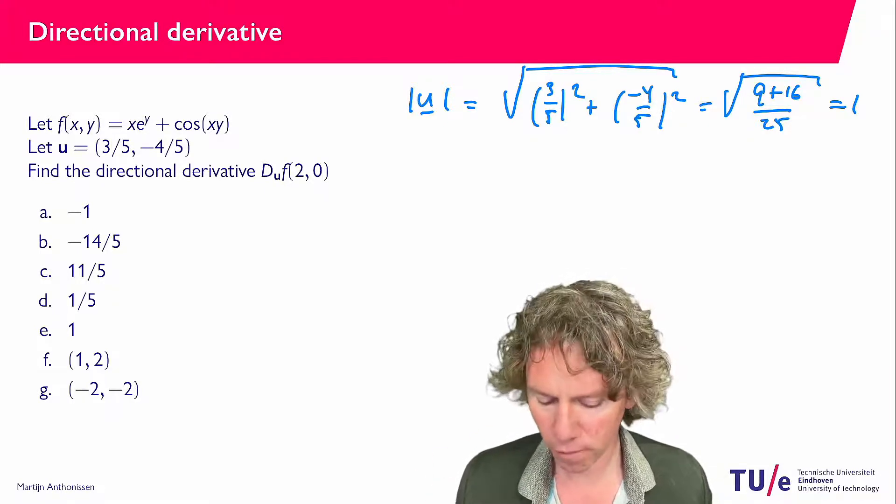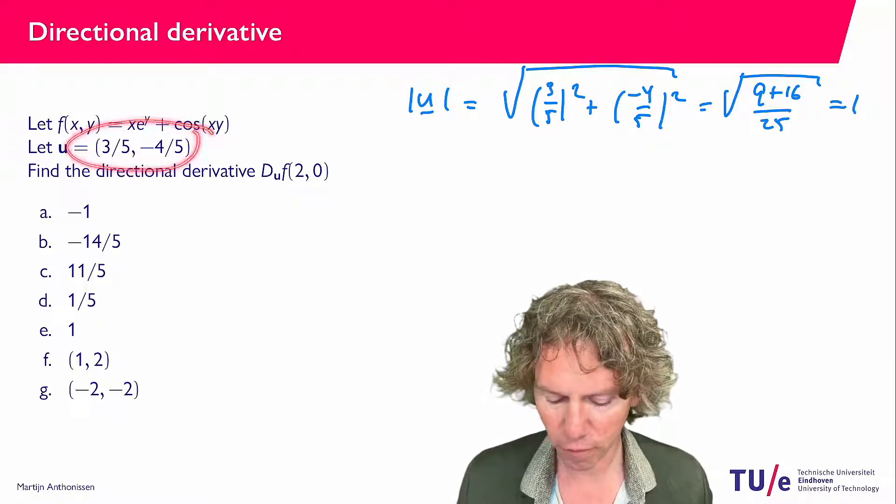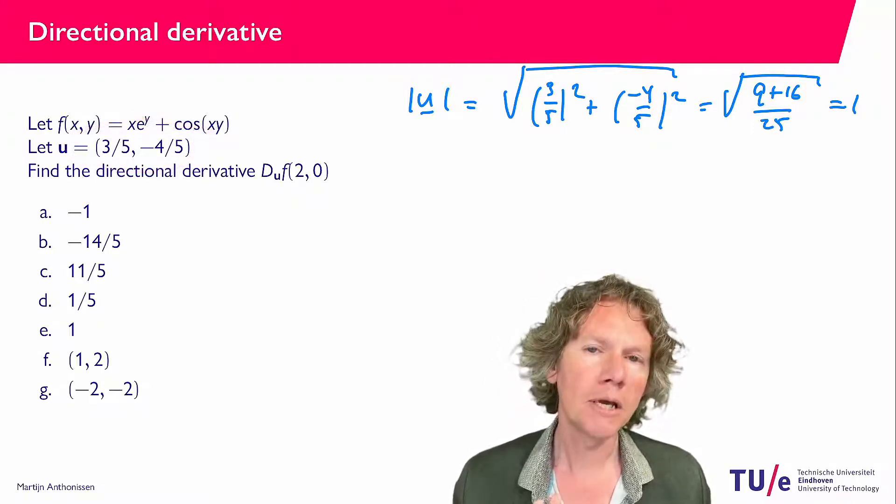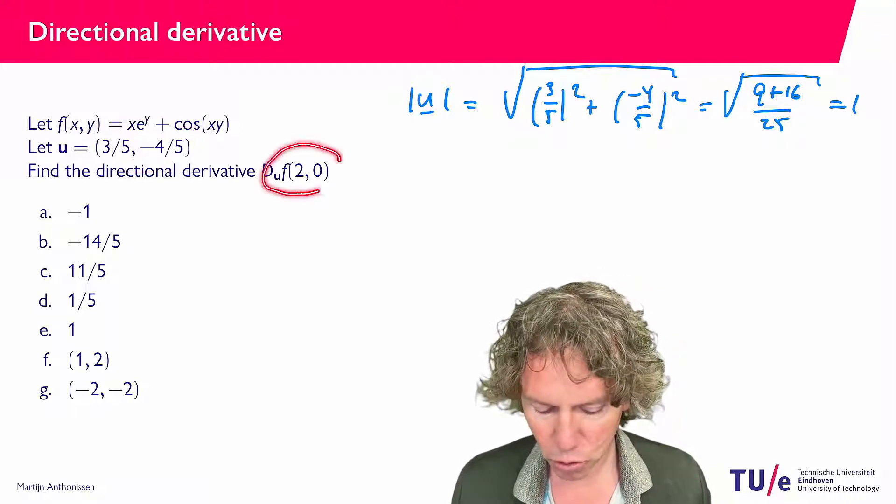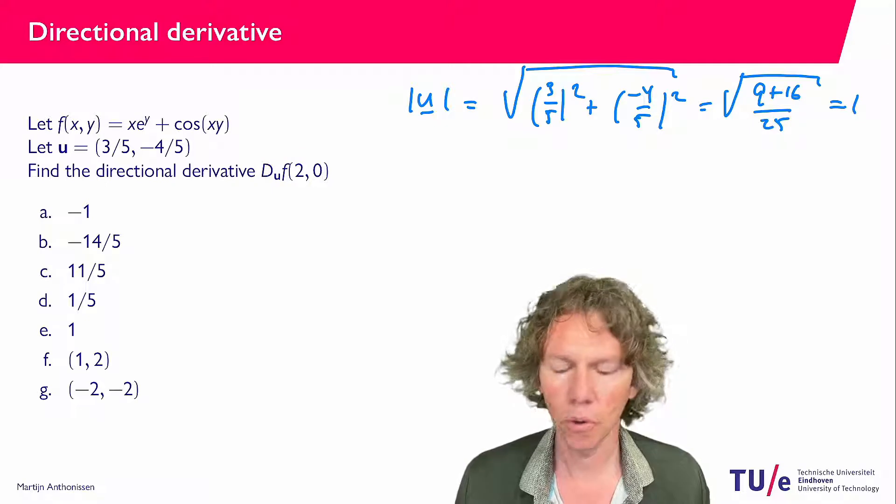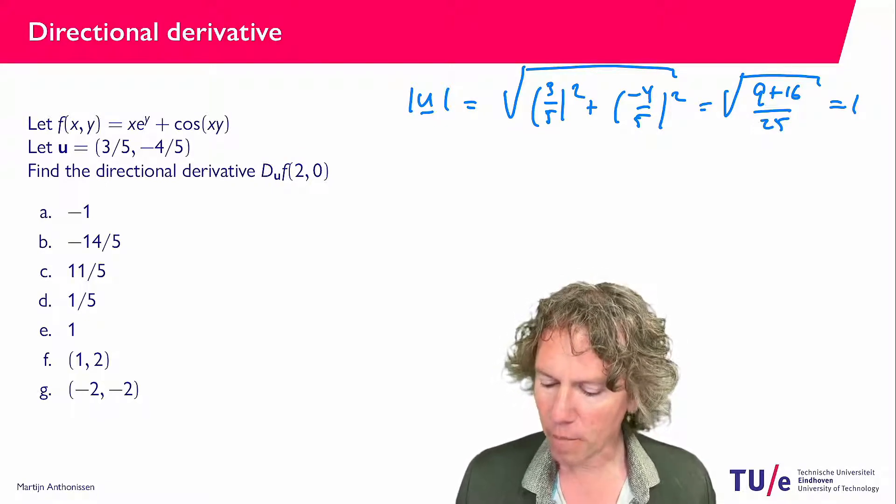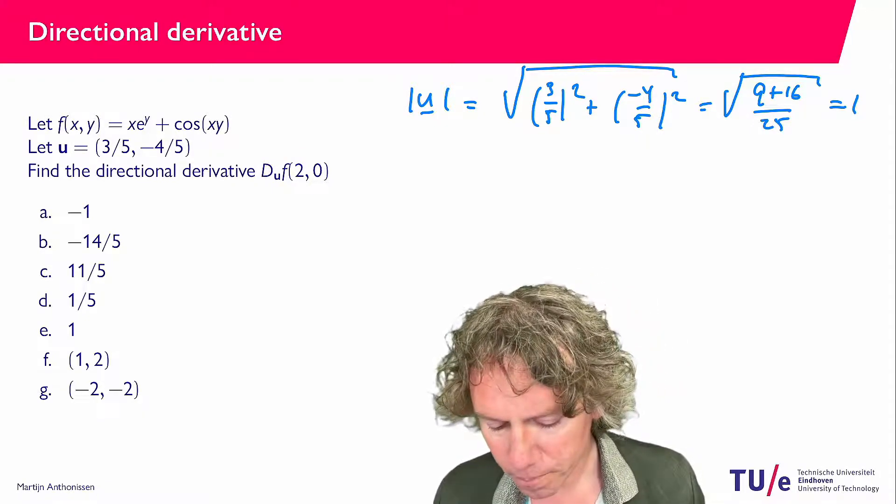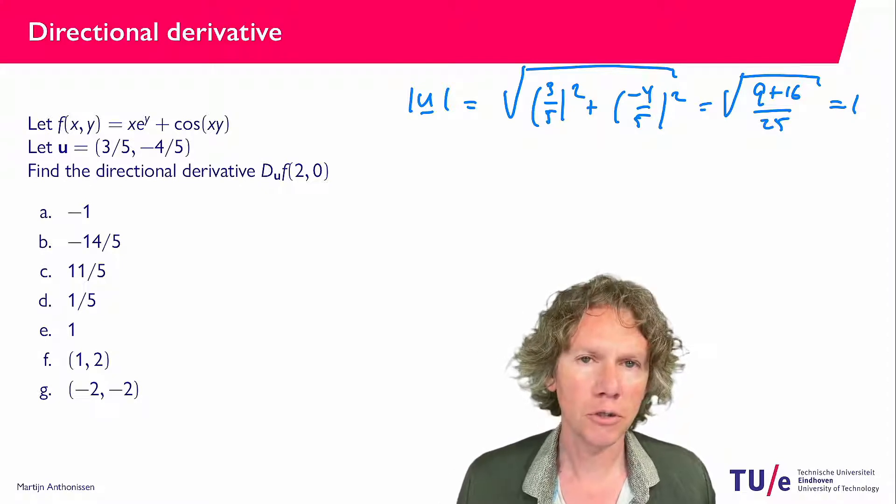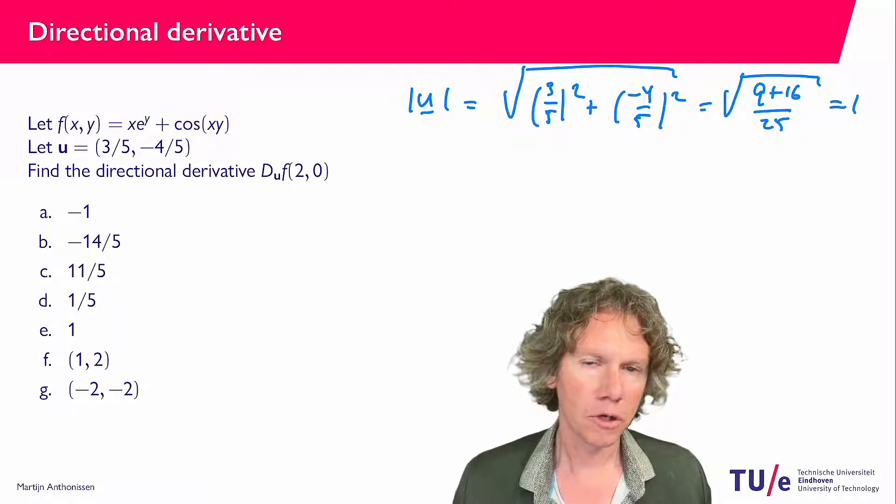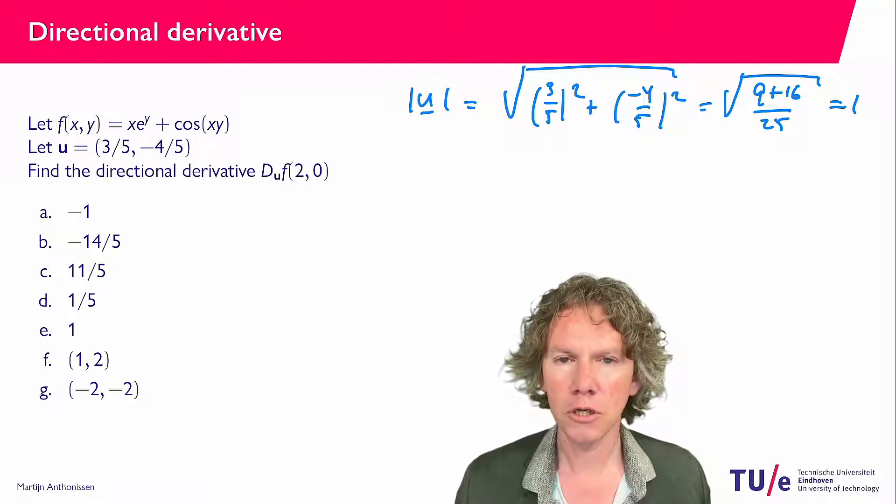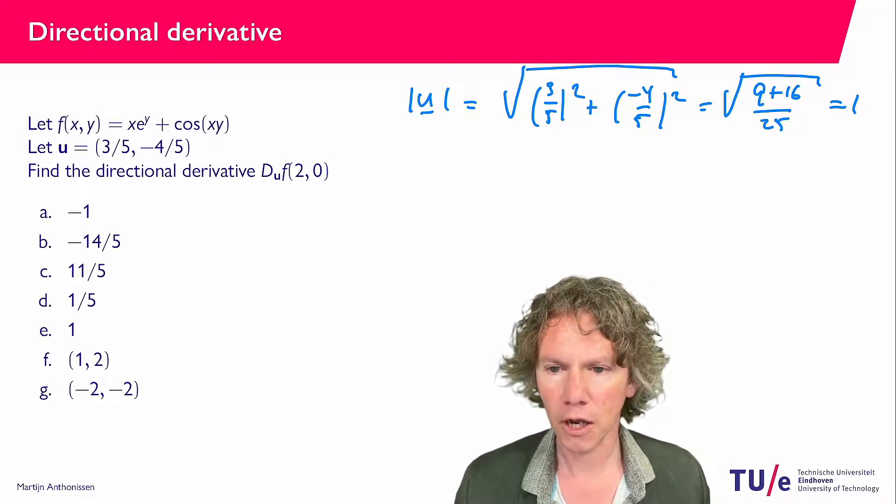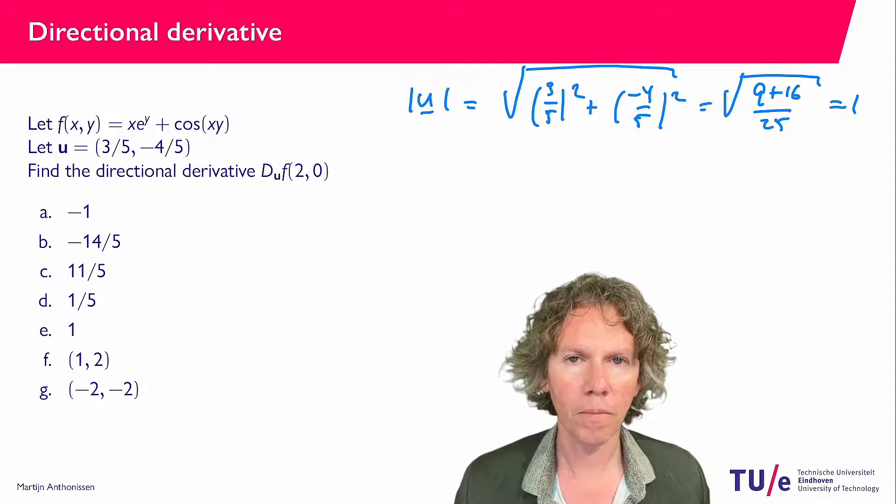Here the direction is (3/5, -4/5). We are being asked to find the directional derivative at the point (2,0), so x equals 2, y equals 0. Now hopefully you recall the definition of directional derivative. Try to solve the question and see if you find one of the answers a through g. Only one of them is correct.